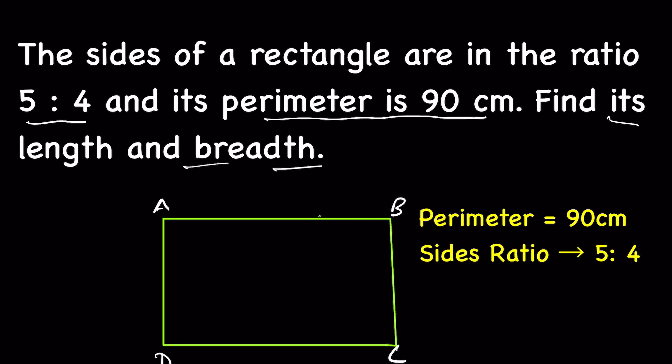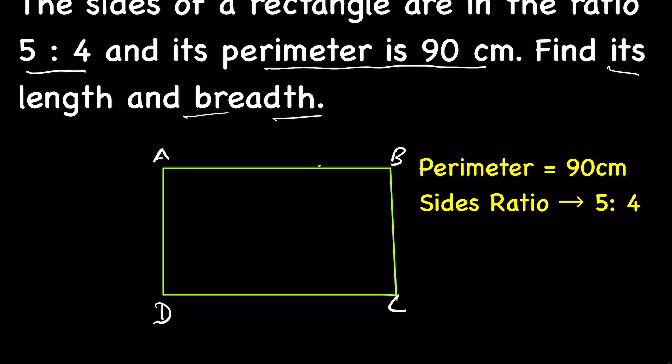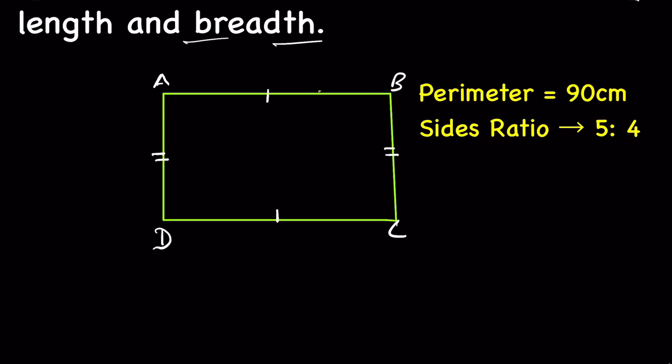The properties of rectangle is that the opposite sides are equal, so AB is equal to CD and AD is equal to BC. Perimeter is 90 centimeter and perimeter of a rectangle, the formula is...